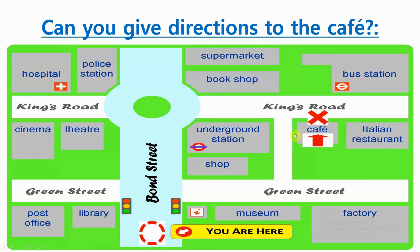Or we could go straight down Bond Street and turn right at the roundabout onto King's Road, go one block. It's across the street on the right, next to the Italian restaurant.